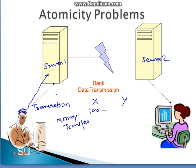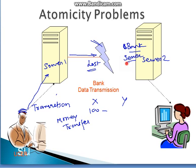In atomicity problems, what happens is the data gets totally lost — it doesn't reach the destination. For example, the bank server is here and the request doesn't get through, and the manager who is available here is not able to process it. This is another bigger problem.